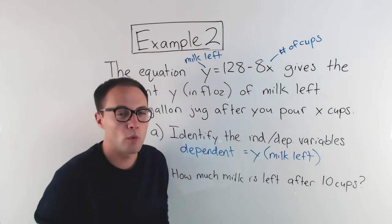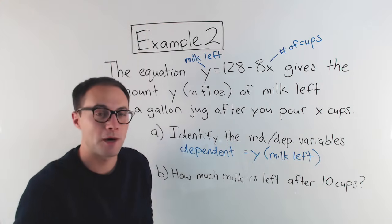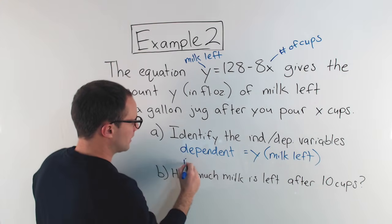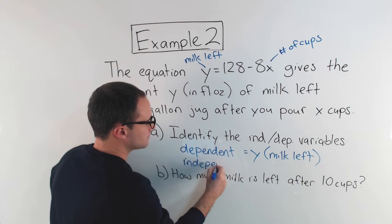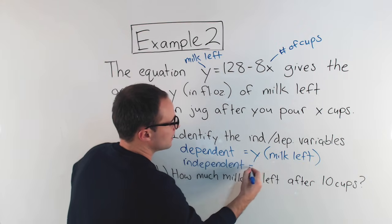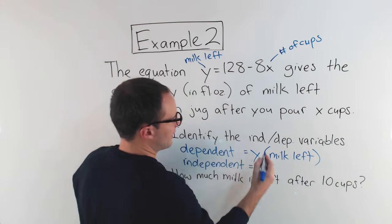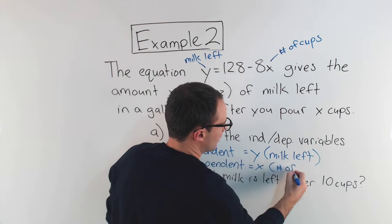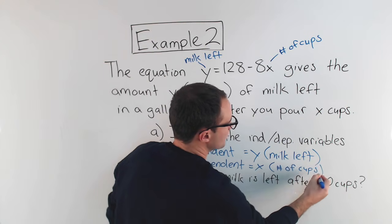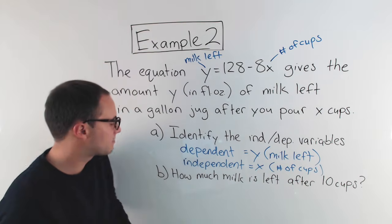And the independent, what we choose freely, is how many cups we pour out. So independent, then, that variable is the x variable, and that's the number of cups that we pour out. So that's part A.